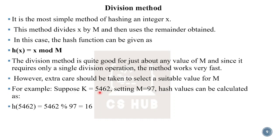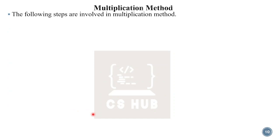For example, given key value 5462 and m = 97 (a prime number), we calculate: h(5462) = 5462 mod 97. The result is 16. So the location is 16. We should select a prime number for m.